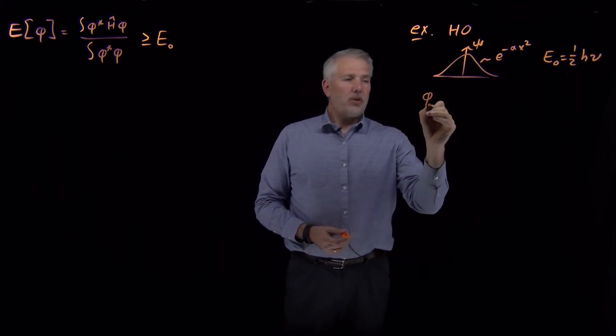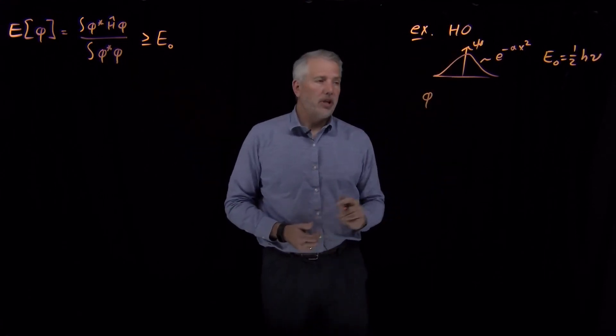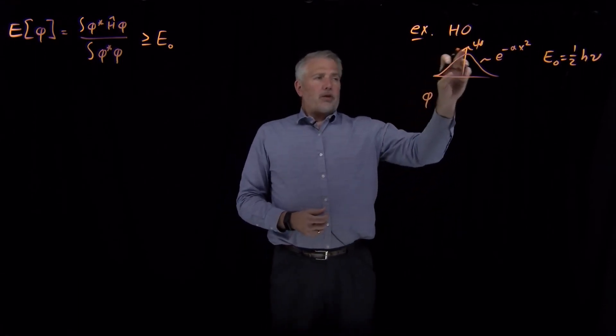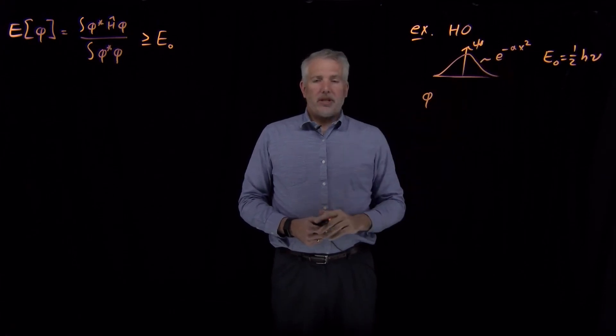Let's suppose we didn't know this, and we want to understand how to use this variational approach. Perhaps we say we know the general shape of the wave function, but we don't know that it's a Gaussian.